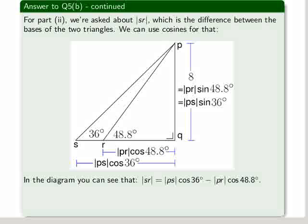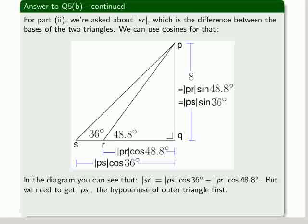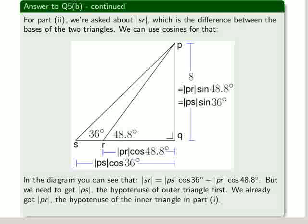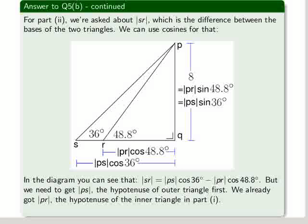In the diagram you can see that SR is equal to PS times cosine of 36 degrees less PR times cosine of 48.8 degrees. We need to get PS, the hypotenuse of the outer triangle first. We already got PR, the hypotenuse of the inner triangle, in part 1.